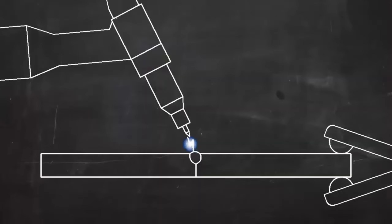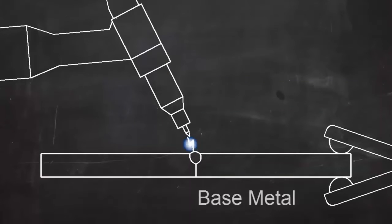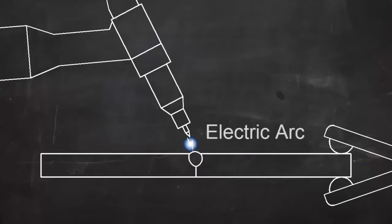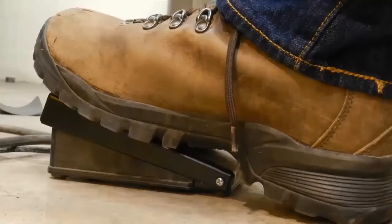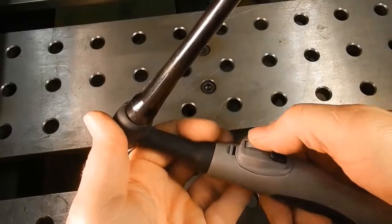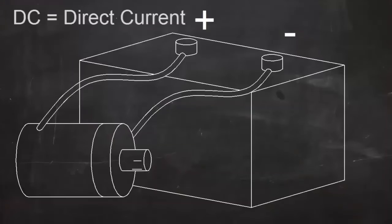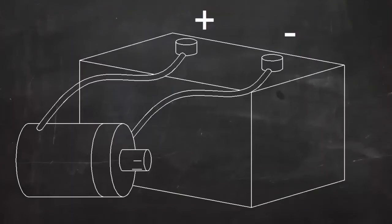TIG works by melting the base metal — that is, the metal that makes up the two pieces to be joined. The heat is generated by an electric arc that forms between the base metal and the tungsten electrode. You can control the amount of heat with a foot pedal or with a thumb wheel on the torch. For most metals, the current is direct current, or DC.